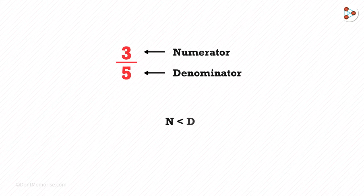When the numerator is less than the denominator, it is called a proper fraction. So 2 over 5 and 5 over 9 are proper fractions.